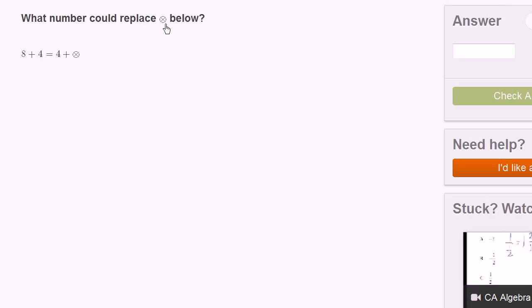What number could replace this weird circle with an x symbol looking thing below? And over here, they have this equation. They say 8 plus 4 is equal to 4 plus weird circle with the x thing. And what they really want us to appreciate is that, look, 8 plus 4 is the exact same thing as 4 plus 8.